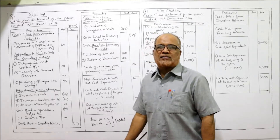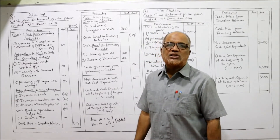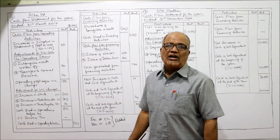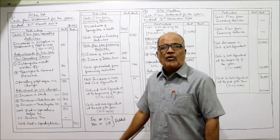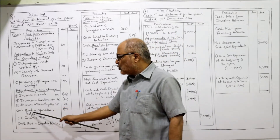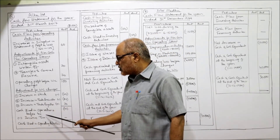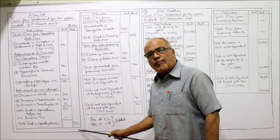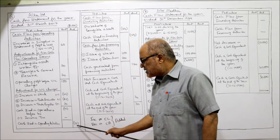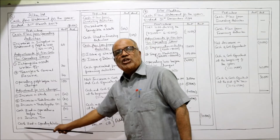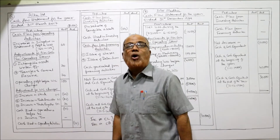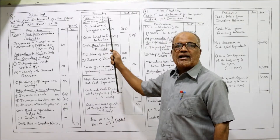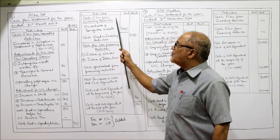Since the result is negative, this is called cash used in operations before tax. There is no income tax, so we take the amount in the outer column: minus 10. This is cash used in operating activities — one activity completed.